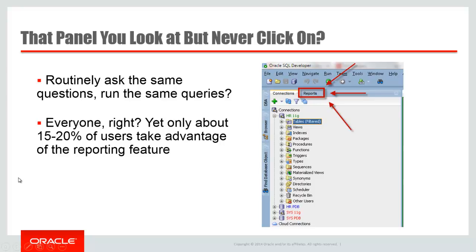Reports have been in the product since at least version 1.5 — that's more than 10 years ago. It's also featured prominently in the user interface; it's right there next to your connections when you first open the tool. If you don't see it in your version, it's probably because you've closed it. You can get it back by clicking on the View menu, and you can dock that panel anywhere you want in the interface.